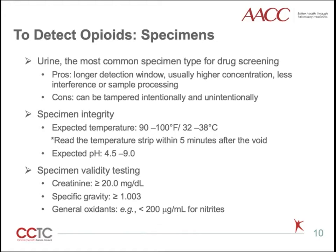The expected temperature of urine is 90 to 100 degrees Fahrenheit and the expected pH is 4.5 to 9. Dilution or adulteration of urine specimens can be detected by monitoring the creatinine concentration, specific gravity, or testing for the presence of oxidants.